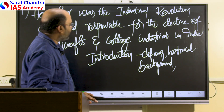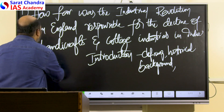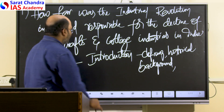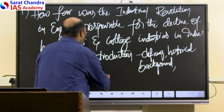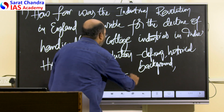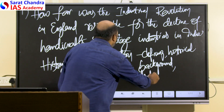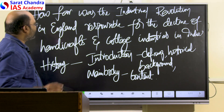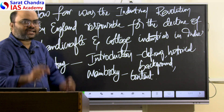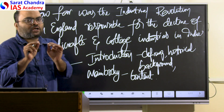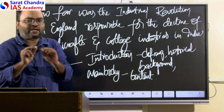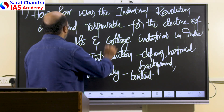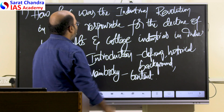That is what we need to write in history as part of our introduction. As we already know, the main body is the content — the main content of the answer. For the main body part, we need to first understand the keywords. We need to pick not more than two or three keywords so that we can address these keywords directly. What are the keywords we can underline from this question?